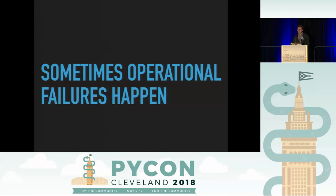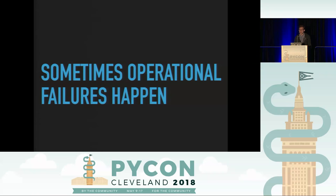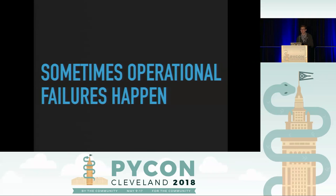We're going to focus on how you can learn from your operational failures. Some of these practices are probably applicable to other situations you want to learn from, like an agile sprint retrospective, but those won't be my focus. I'll be using 'the website went down' for most of the examples, because that's a situation accessible to many folks — but don't take that to mean this is the only type of operational failure.